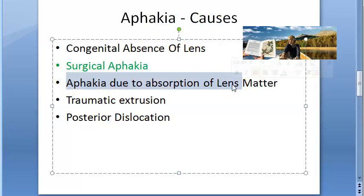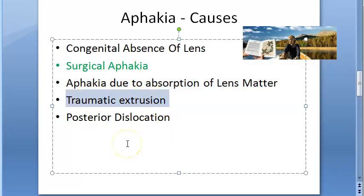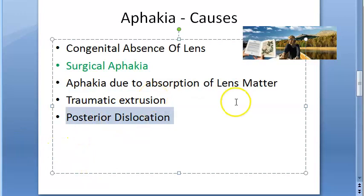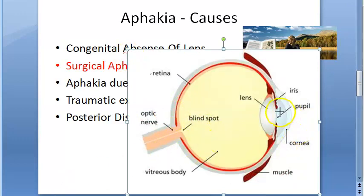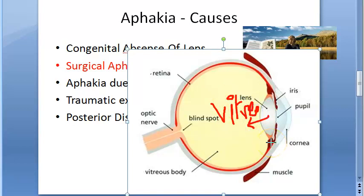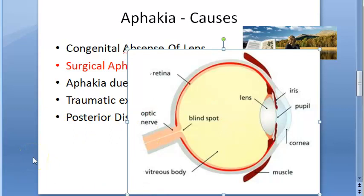Aphakia can also occur due to absorption of lens matter — after a trauma, the lens matter itself can get absorbed by the body. Then there is traumatic extrusion, where the lens is extruded out of the eye due to trauma — this is rare. Finally, posterior dislocation: the lens dislocates into the vitreous humor behind the lens, causing optical aphakia.